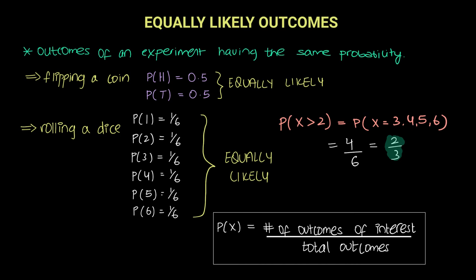So, if you can identify that your experiment is an equally likely outcome case, it makes your calculation so much simpler. You do not need to individually find the probabilities of each outcome. In fact, you can just count the number of outcomes which are of your interest and divide it by the total number of outcomes.